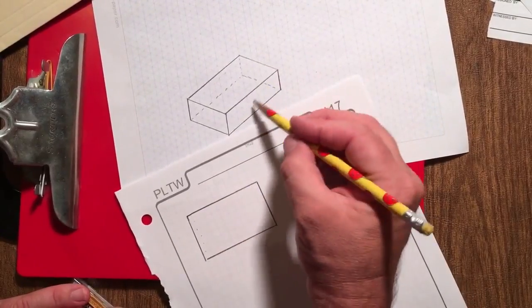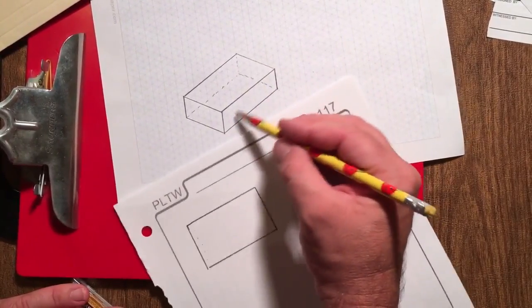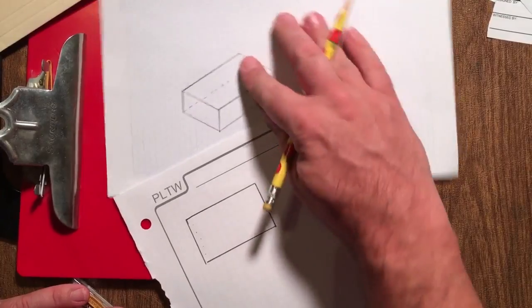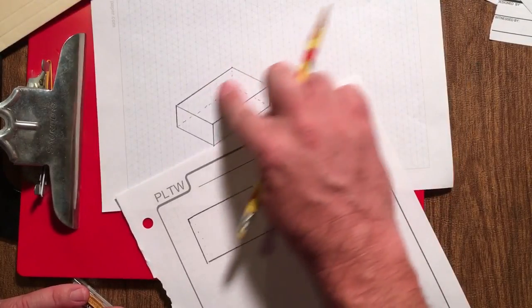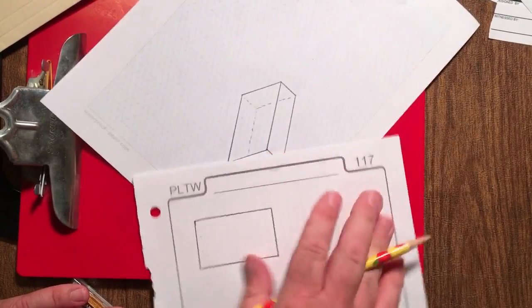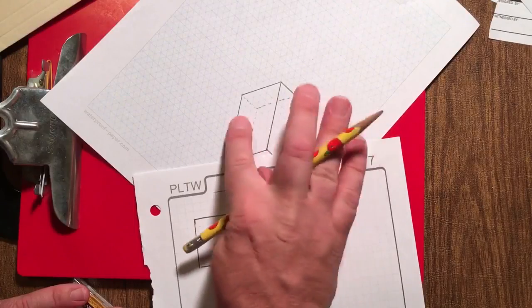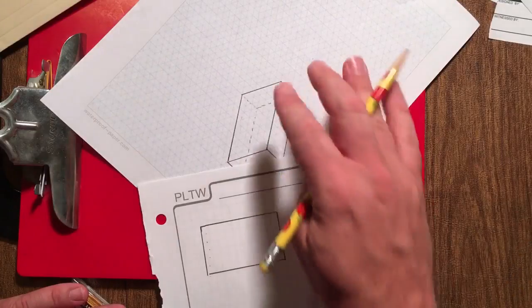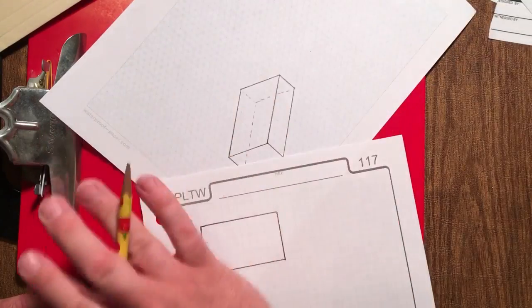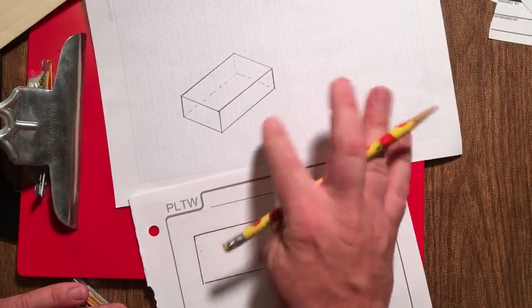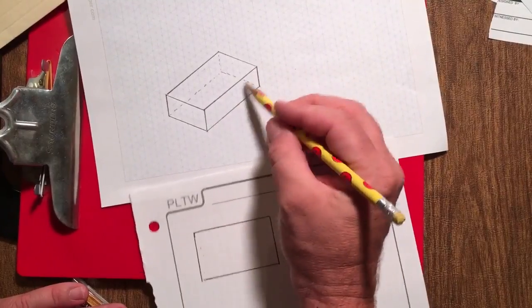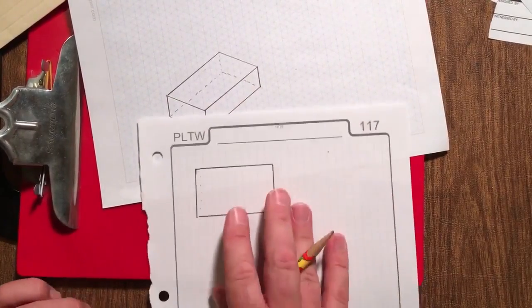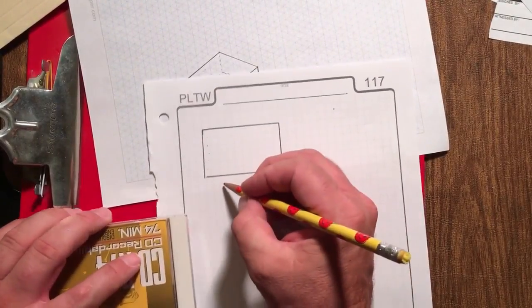We're going to call this the front. Because we kind of have this going this way being the top. We could have called this the top. And then this rectangle would have been turned. Doesn't matter how you call top. But you just got to pick it and then everything is oriented from there. So our front, which is going to be here, is now going to be 3 by 10. So we've got to leave a little bit of a gap.